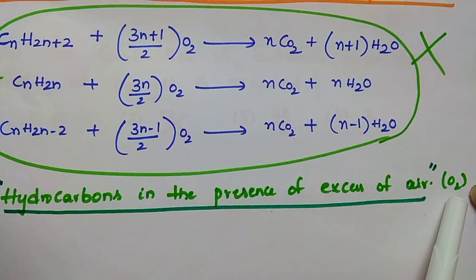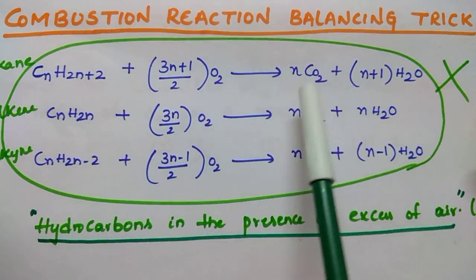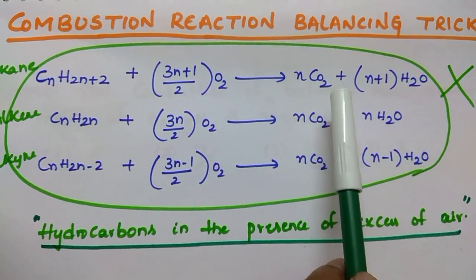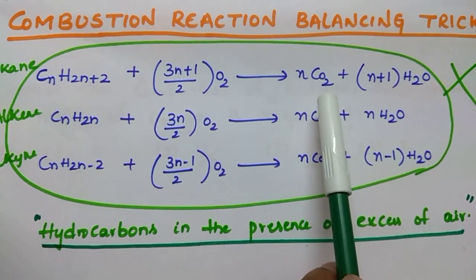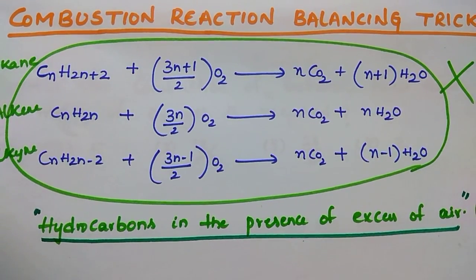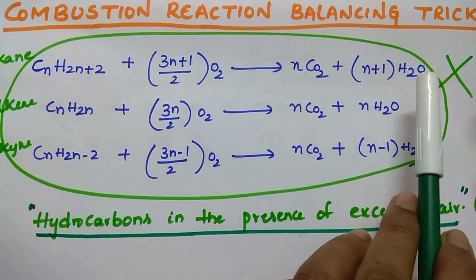If you supply insufficient amounts of oxygen, instead of carbon dioxide gas as the product we will get carbon monoxide that is highly poisonous. That is the reason we should provide excess amount of air, then only hydrocarbons react completely and it results in the formation of carbon dioxide and water.